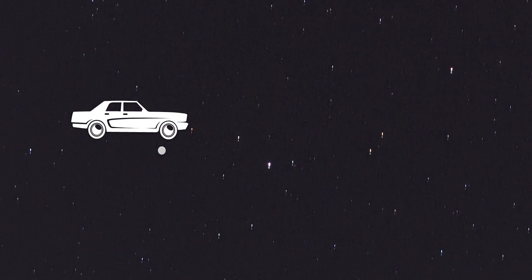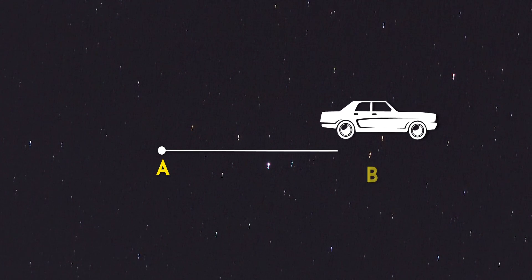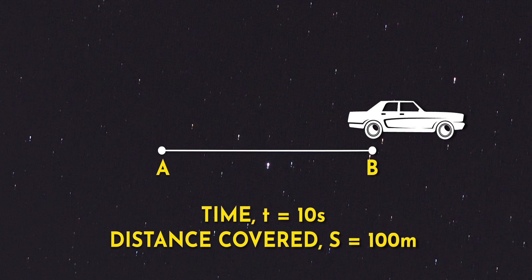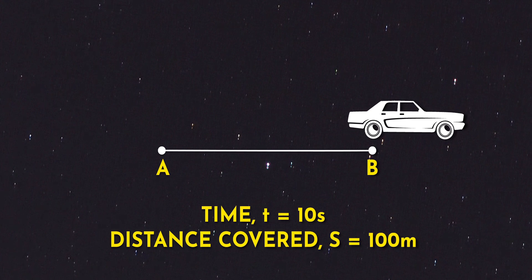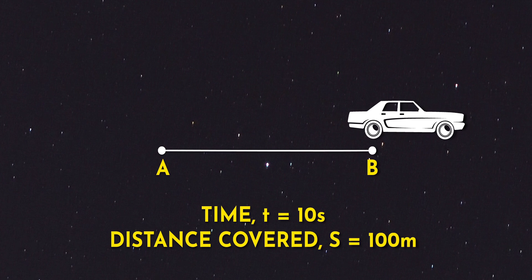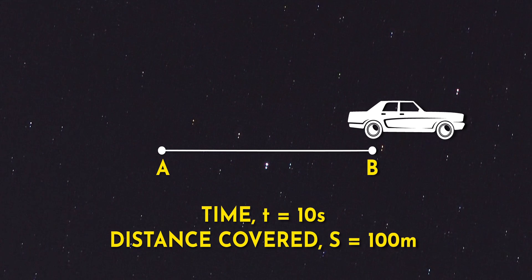Let's take a look at a car. A is one point, B is another point. Let's take a look at the speed. We can see the distance between A and B. If a car is moving at some speed,